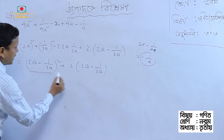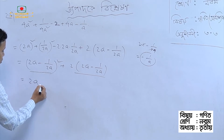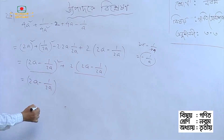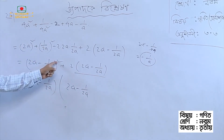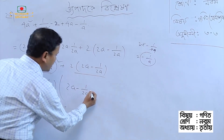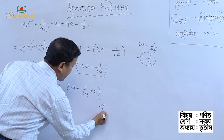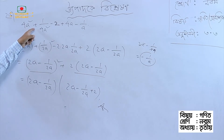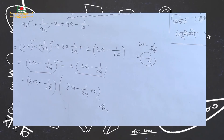So I will write a minus 1 by 2a, and then 2a minus 1 by 2a. So the expression 4a squared plus 1 by 4a squared minus 2 plus 4a minus 1 by a simplifies. I will write a minus 1 by a, which gives us 3 divided by a.